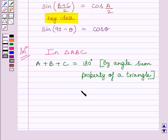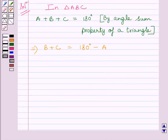Now subtracting A from both the sides, we get B plus C is equal to 180 degrees minus A. Now dividing both the sides by 2, we get B plus C upon 2 is equal to 90 degrees minus A upon 2.